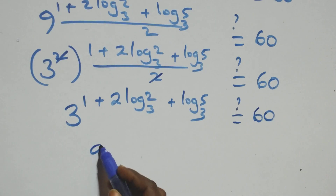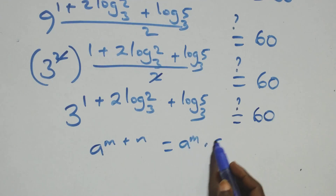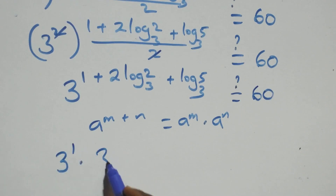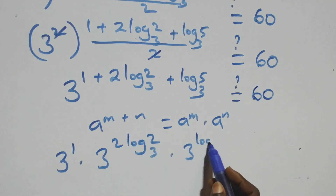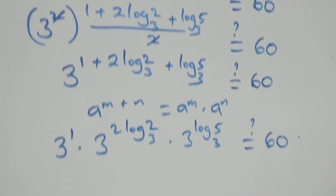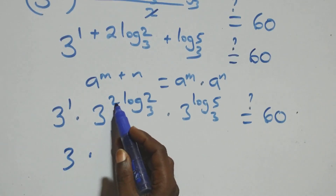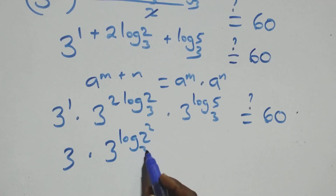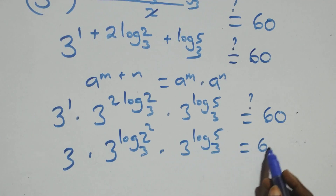Applying the index law — a raised to power m plus n equals a raised to power m times a raised to power n — this becomes 3 raised to power 1, times 3 raised to power 2 log 2 base 3, times 3 raised to power log 5 base 3, equals 60.